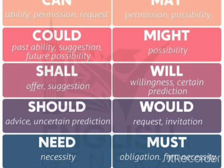Let us once again revise where we are using modal verbs. 'Can' — ability, permission, and request. 'Could' — past ability, suggestion, future possibility. 'Shall' — offer, suggestion. 'Should' — advice, uncertain prediction, need, necessity. 'Ought to' — obligation, probability. 'May' — permission, possibility. 'Might' — possibility. 'Will' — willingness. 'Would' — request or invitation. 'Must' — obligation, affirmed necessity. 'Have to' — obligation or forced circumstances.